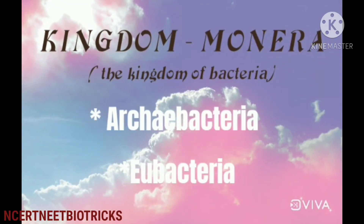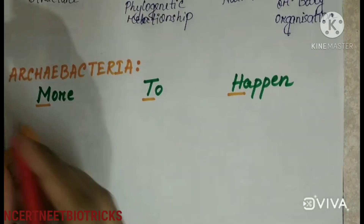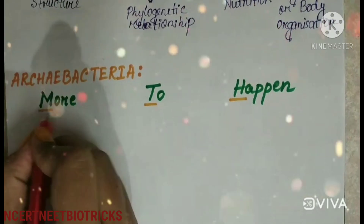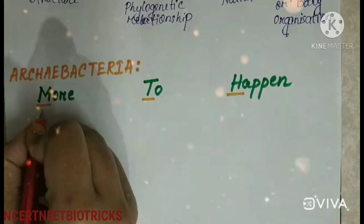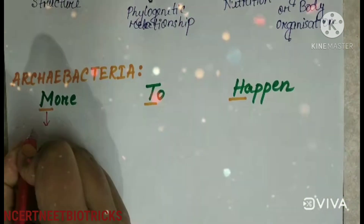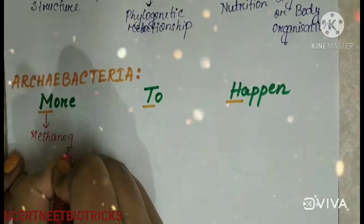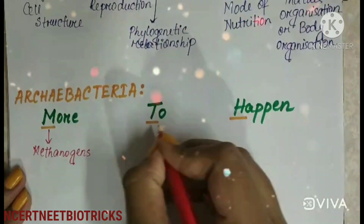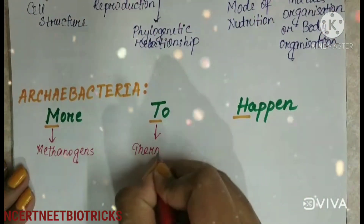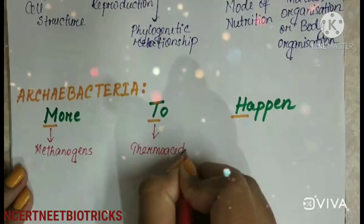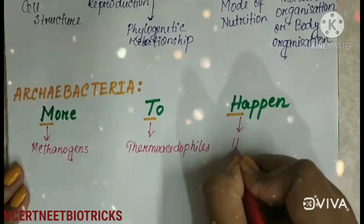Next is Kingdom Monera. Kingdom Monera is divided into 2 kinds. Archaebacteria can be remembered as 'More to Happen' — M for Methanogens, T for Thermoacidophiles, and H for Halophiles.